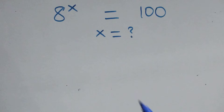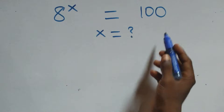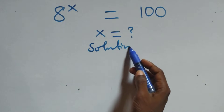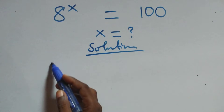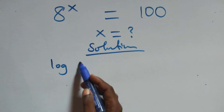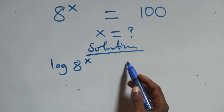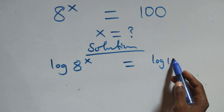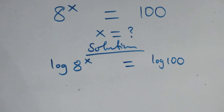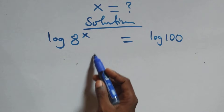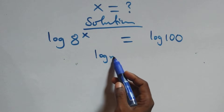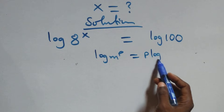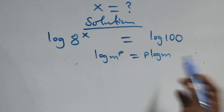Hello, you're welcome. How to solve this nice exponential equation. From here, what we have, we take the log on both sides. So we have log of 8 raised to power x equals to log of 100. From here we apply the power law of logarithms, which states that log of M to the power P equals P times log M.